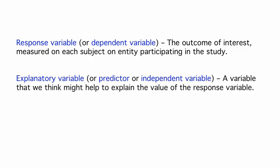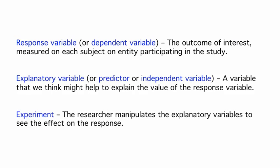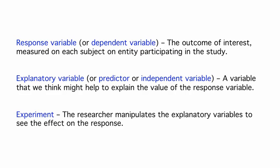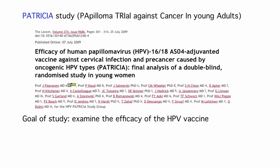The key feature that separates an experiment from an observational study is that in an experiment, the researcher manipulates the explanatory variables to see the effect on the response variable. An example of an experiment that we've already seen is the Patricia study, to examine the efficacy of a vaccine at preventing infections with HPV.